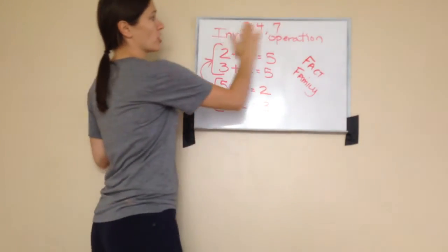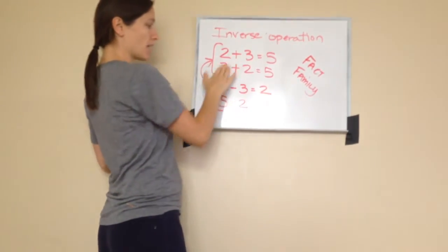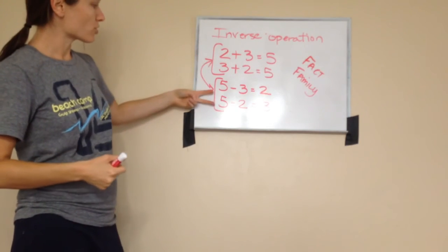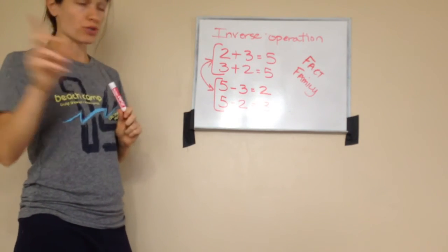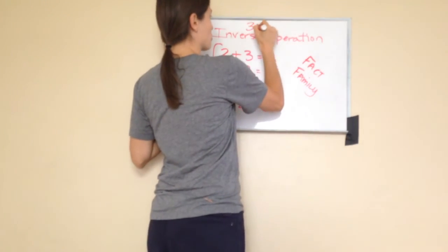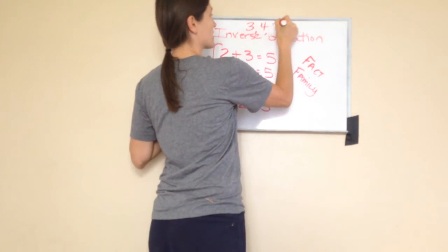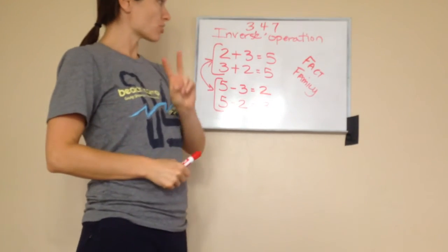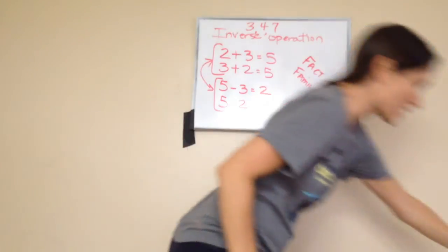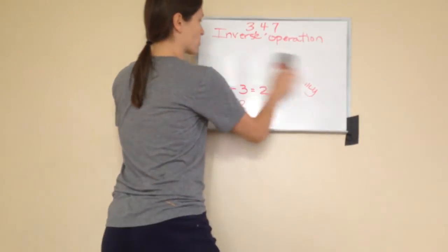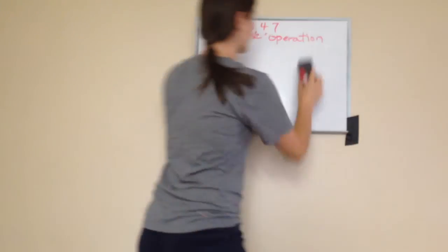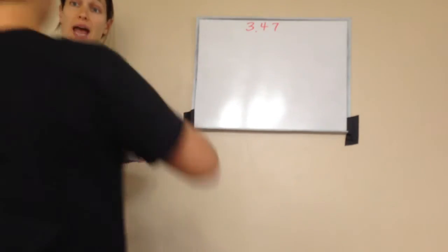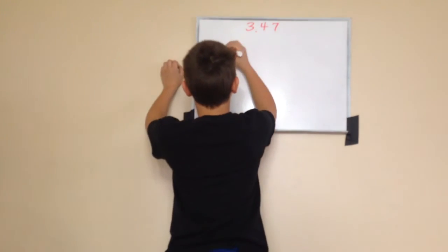Now it's your turn. Using the numbers three, four, and seven, come up with two addition problems and two subtraction problems. Eli, come up here and draw it for me — a fact family using the numbers three, four, and seven. You should have two addition problems and two subtraction problems.